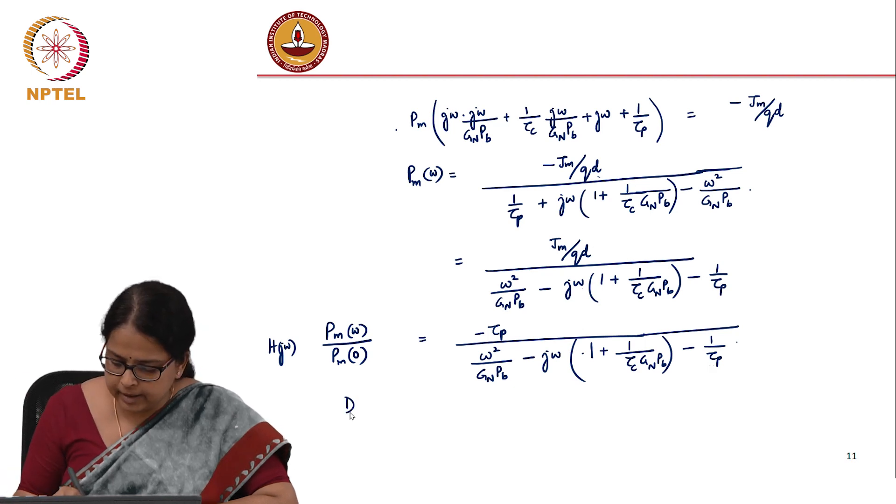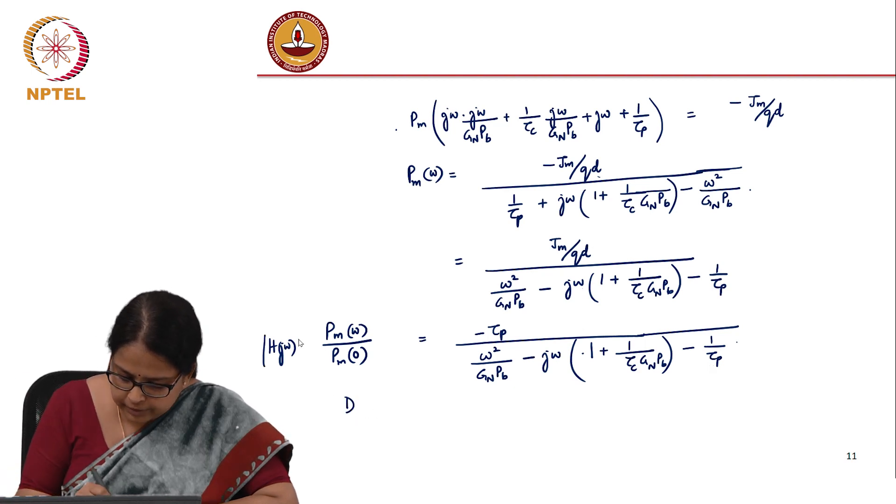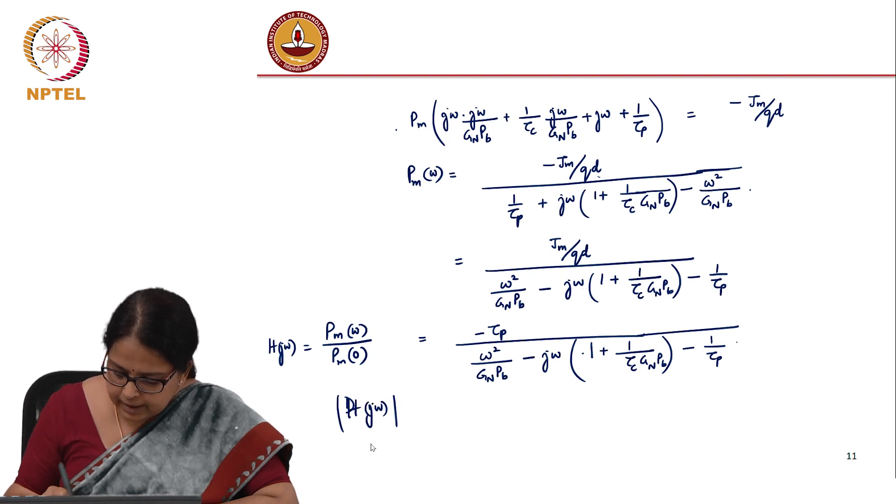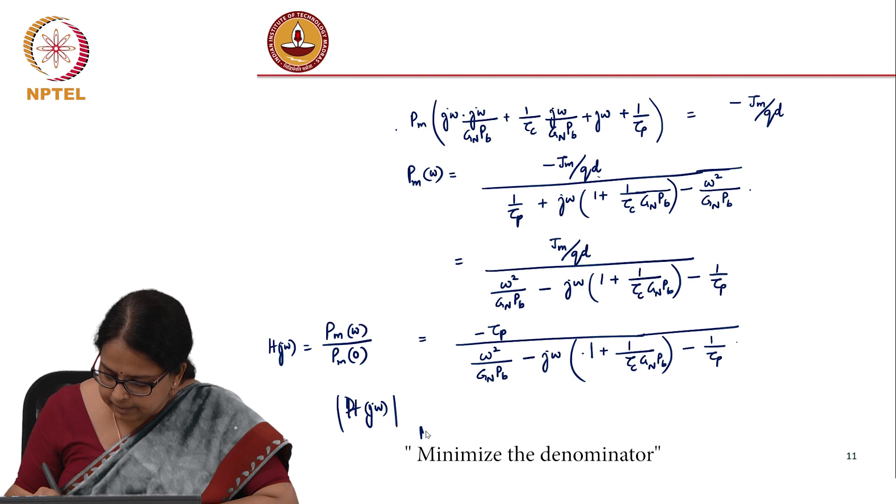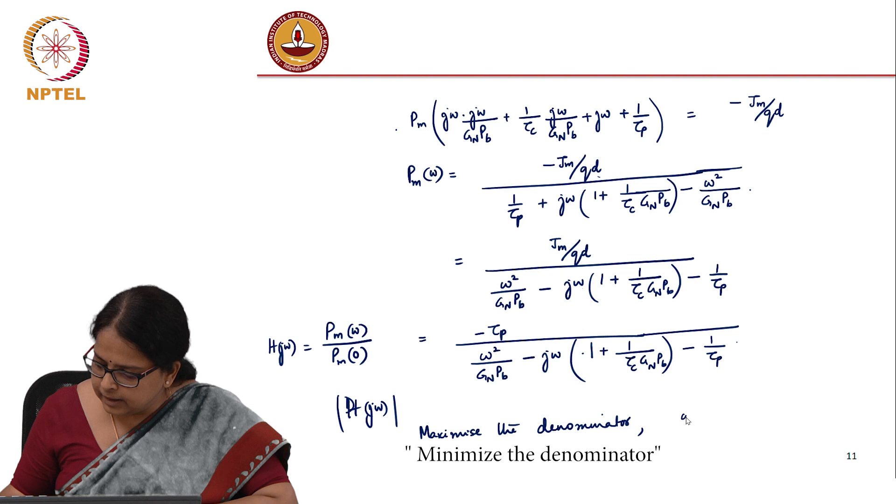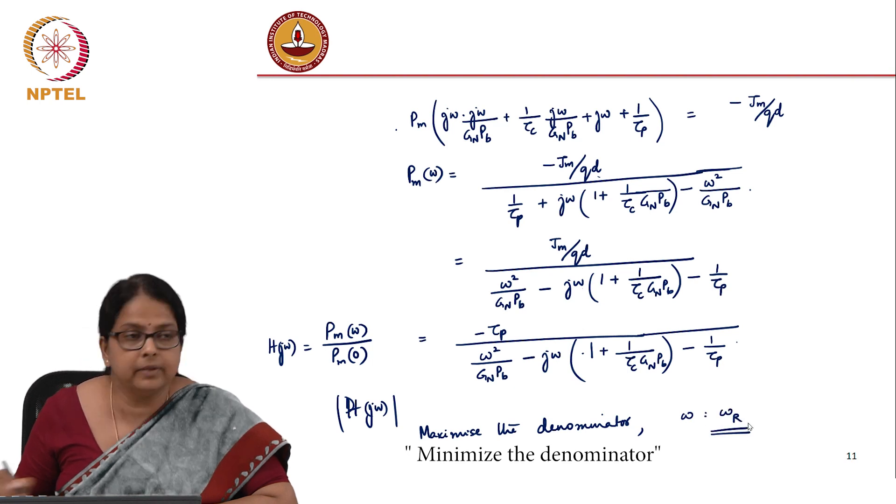Which means the first derivative of my denominator should go to zero. That is when the response will be maximum. You have to find mod h(j*omega) and in that maximize the denominator. And the frequency corresponding to the maximum is what you call the resonant frequency of the system.